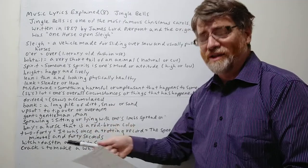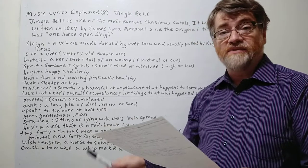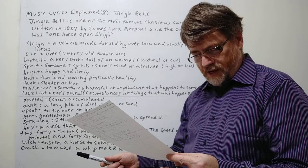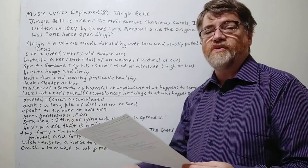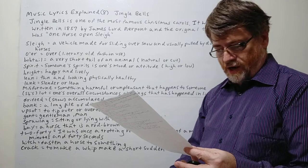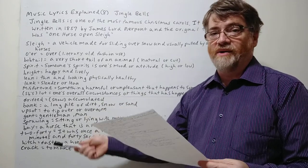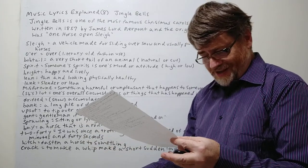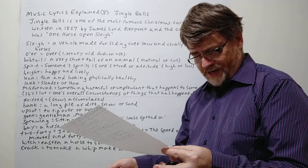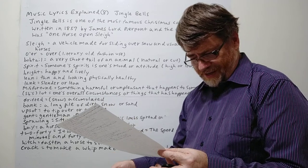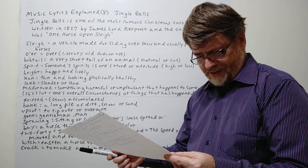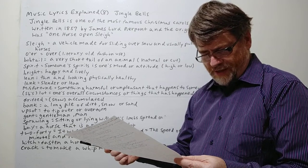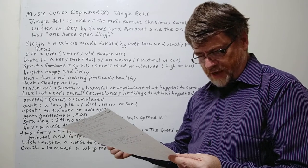And then we're up to the last verse, basically. He says, 'Now the ground is white, go while you're young.' So if the ground is white, it means it snowed, a lot of snow on the ground. Go while you're young—go out and have fun in this snow, especially when you're younger. Maybe when you're older, you won't enjoy this snow as much. Take the girls tonight and sing this sleighing song, basically.